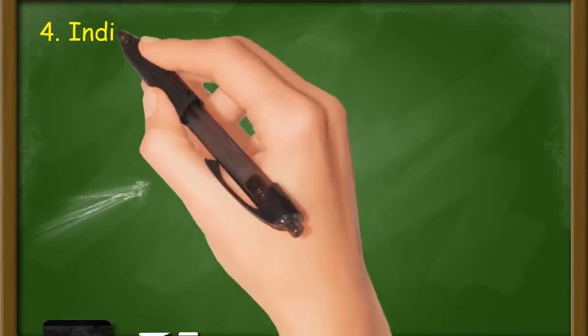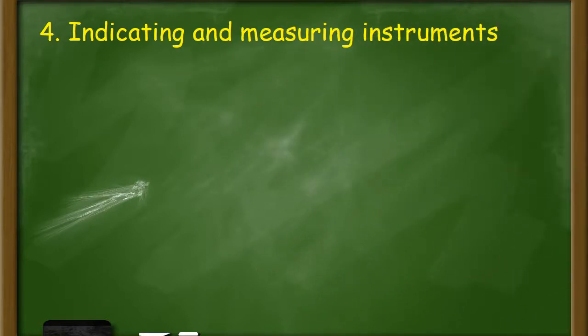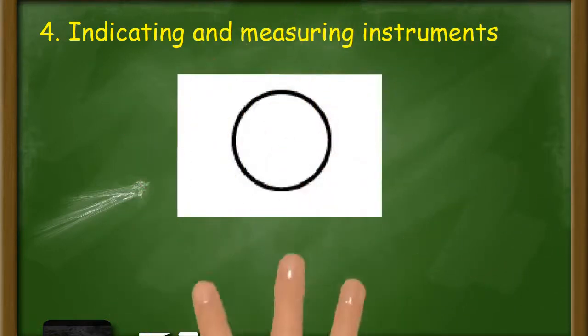Number 4: Indicating and measuring instruments. The circle in piping system shows indicating and measuring instruments.